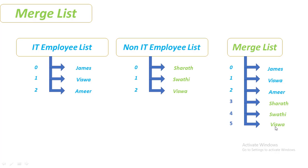But if list one is merged with non-IT employee list (list two), then we'll get the output as Serat, Swati, Vishwa, and then James, Vishwa, and Amir. The order changes based on which list merges into which, and both will combine as a single list.